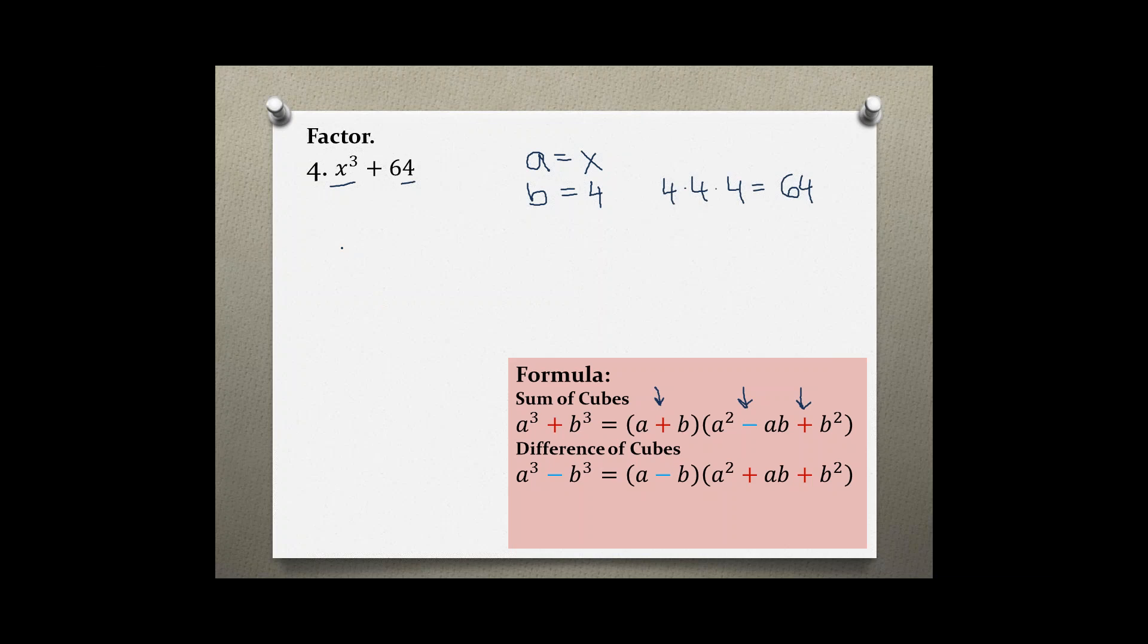Now I can use my formula to plug in my a and b. a cubed is x cubed plus b cubed, so that would be 4 cubed. And that equals (a plus b), so (x plus 4). And then the last term, b squared, so 4 times 4 is 16.